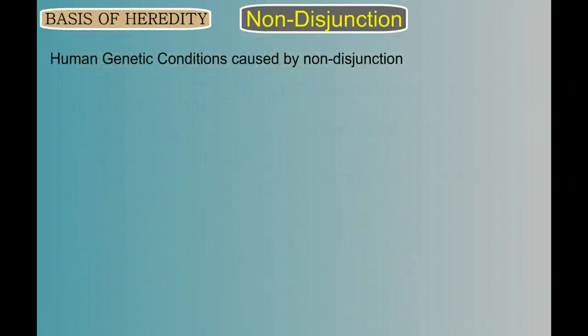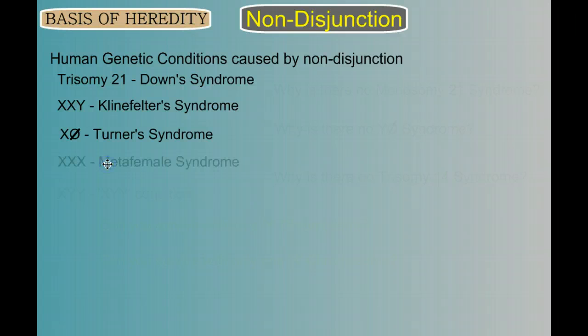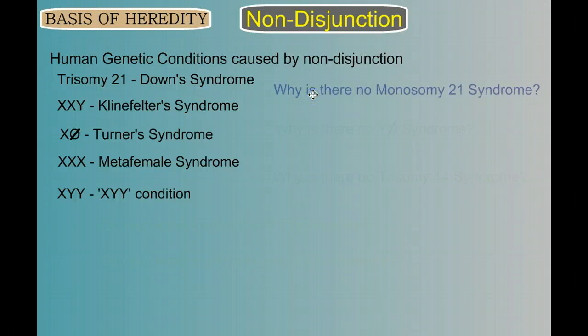So human genetic conditions caused by non-disjunction. We've already saw a karyotype of trisomy 21 or Down syndrome. We can end up with two X chromosomes and a Y chromosome with Klinefelter's. And we saw that karyotype. And we also saw a karyotype of Turner syndrome, where we had an X chromosome with no partner. And we can also get three X chromosomes. We call that metafemale. And we have the XYY condition. Now notice how so many of these have to do with the X and Y chromosomes.